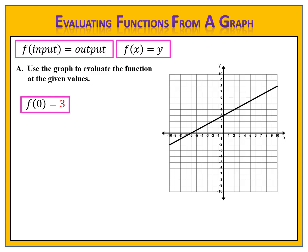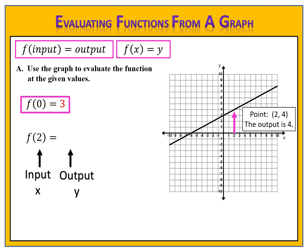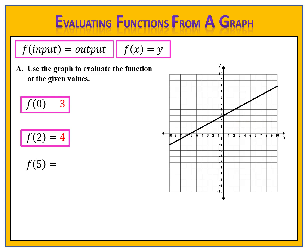Let's take a look at another example: evaluate f of 2. F of input equals output, so with f of 2, the input is 2 and we want to find the output. We go along the x-axis to the input 2, go up to the graph where that point is, and find the point (2, 4). The input is 2 and the output is 4, so f of 2 equals 4.